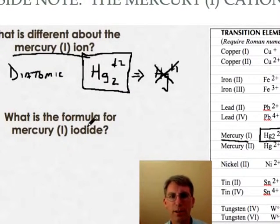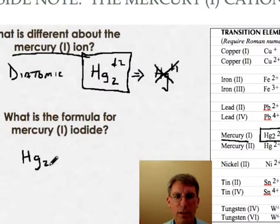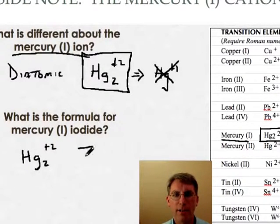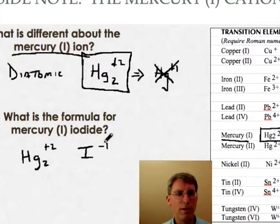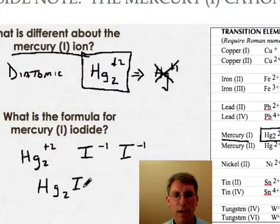So let's take a look at a formula that's going to include the mercury one ion in it. So mercury one is going to be Hg2 with a plus two charge. And iodine's a halogen, so it'll be I with a negative one. Again, the two and the one don't balance out, so I'm going to need a second minus one charge. And I'm going to write that as Hg2I2.